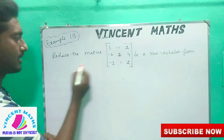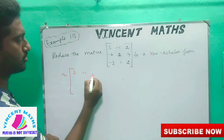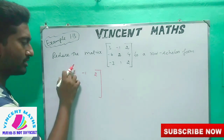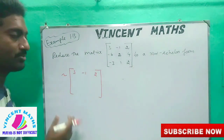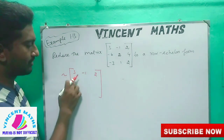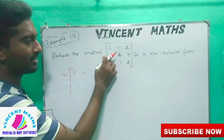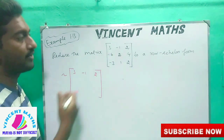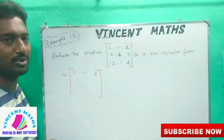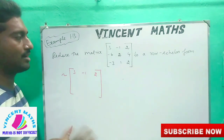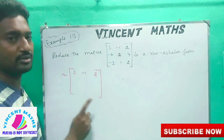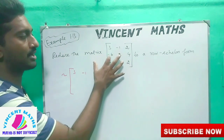Ok friends, first of all let's take a matrix. Let's take a matrix: minus 1, 2... Now we will see Row Echelon Form. What is Row Echelon Form? What do we need to do?